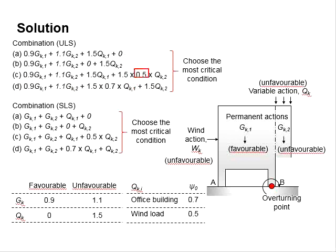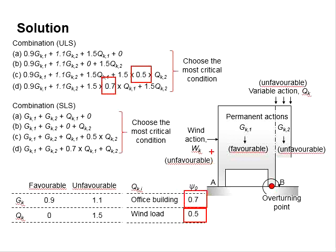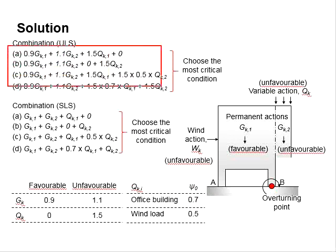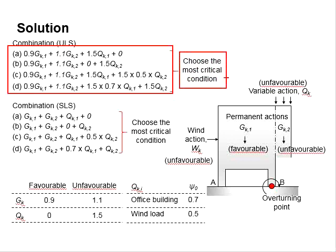The factor psi_0 differs between wind load and the office building. When psi_0 is applied to the wind load, it equals 0.5, while when applied to the office building variable actions, it equals 0.7. Out of these four load combinations, the most critical situation is selected.